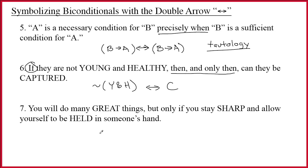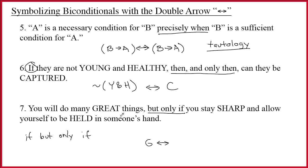Sentence seven: 'You will do many great things, but only if you stay sharp and allow yourself to be held in someone's hand.' Again, it's about the synonym — 'but only if' is a synonym for 'if and only if.' Notice if it said 'if but only if,' that would obviously be a synonym since 'but' is a synonym for 'and.' Nobody says 'if but only if,' but 'but only if' is said frequently, and every time it means a double arrow. The symbolization is g double arrow (s and h). This is the parable of a pencil.